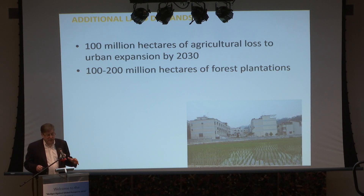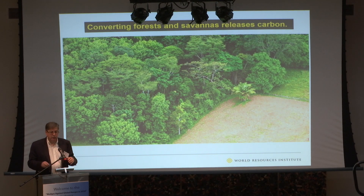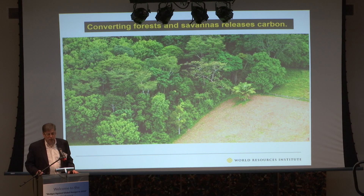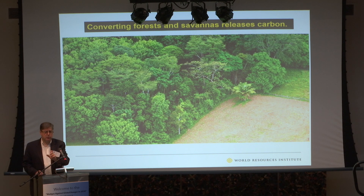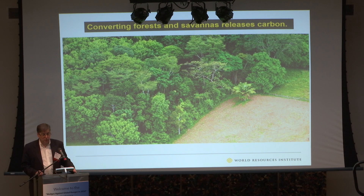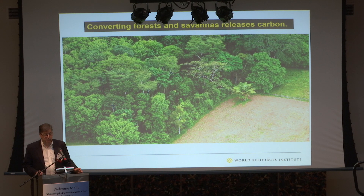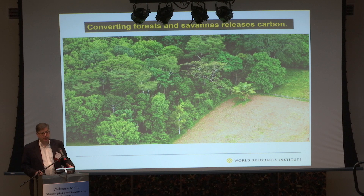We'll probably also need more land for urban expansion and forest plantations. This is a very big deal because converting land releases carbon. Vegetation is 50% carbon, and you typically lose about a quarter of the carbon in the top meter of soils when you convert agricultural land. Every strategy for stabilizing the climate at an acceptable temperature essentially assumes zero net land conversion between now and 2050, yet we're on track for hundreds of millions of hectares of conversion even at historical rates of yield growth.